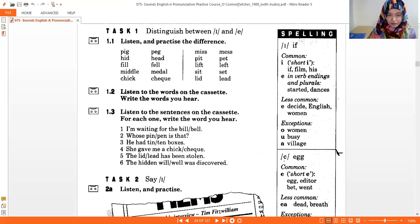One three. Listen to these sentences. For each one, write the word you hear. Okay, this time you have to write which one you listen to, okay? There you can see, for example, number one, I'm waiting for the bill or bell. Now, you can circle or write the word that you hear. I'm waiting for the bell. Two, whose pen is that? Three, he had tin boxes. Four, she gave me a chick. Five, the lead has been stolen. Six, the hidden will was discovered.